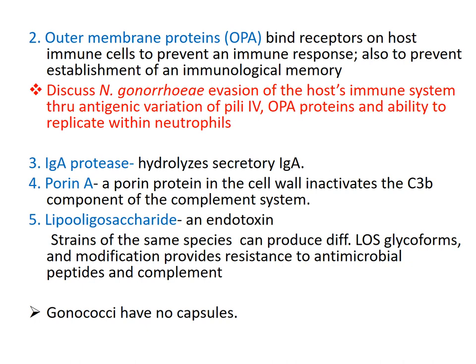Porin A is a protein in the cell wall of the bacteria that inactivates the C3b component of the complement system. The complement system is an important arm of the immune system that plays a very important role in containing gonorrhea infection. Inactivation of C3b by Porin A would lead to disseminated gonorrhea disease.